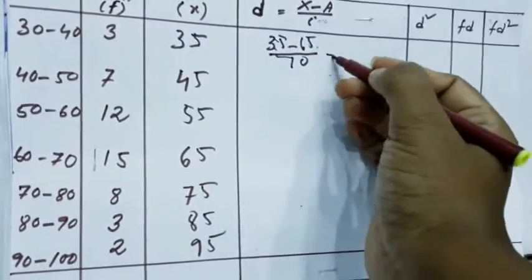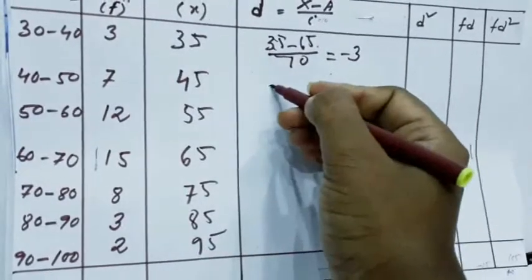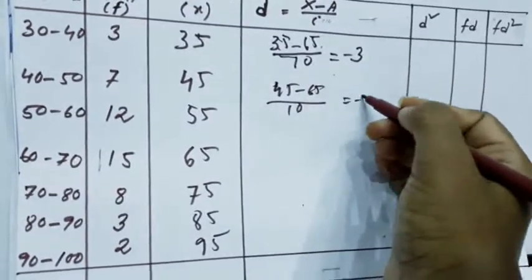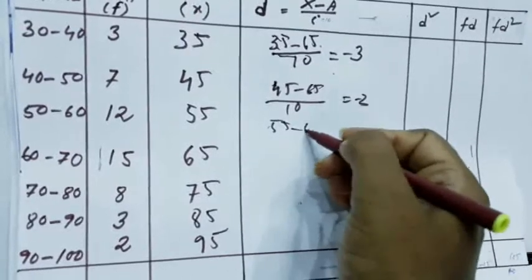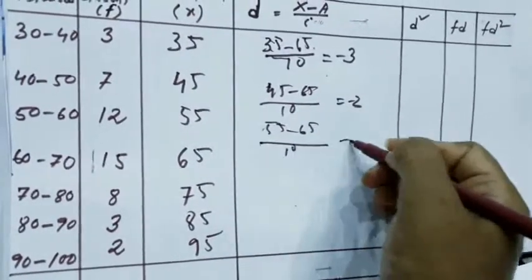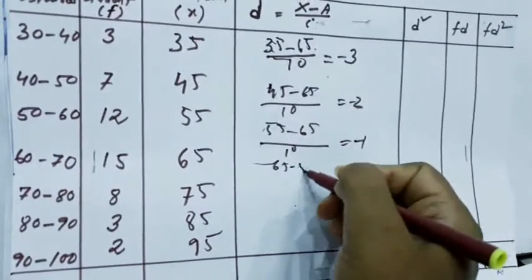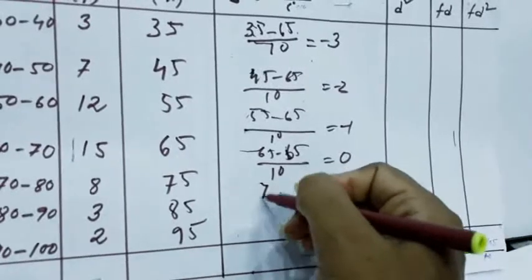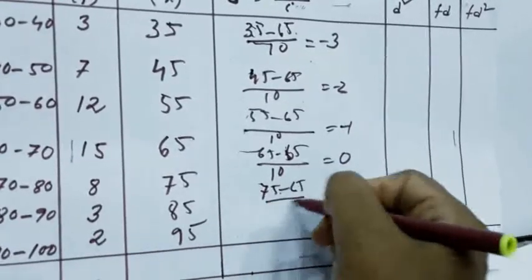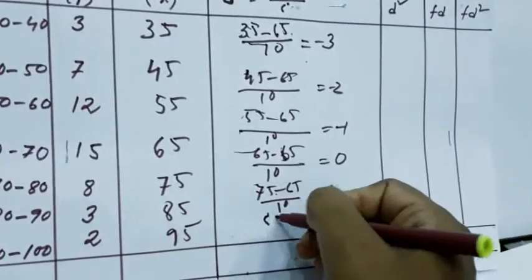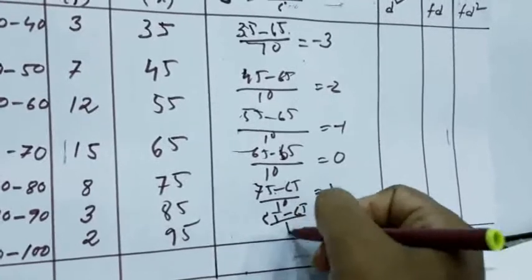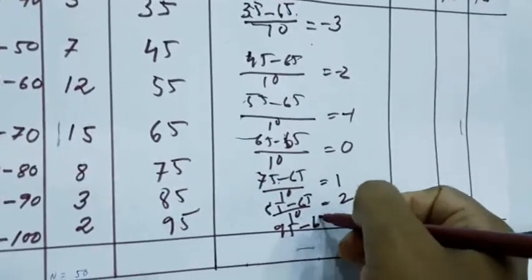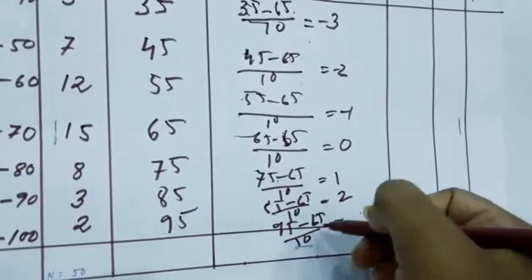This is what, 35 minus 65, 30, 30 by 10, is minus 3. 45 minus 65 by 10 equals to minus 2. 55 minus 65 by 10, this is minus 1. 65 minus 65 by 10, this is 0. 75 minus 65 by 10, this is 1. 85 minus 65 by 10, this is 2. 95 minus 65 by 10, 30 by 10 is 3.